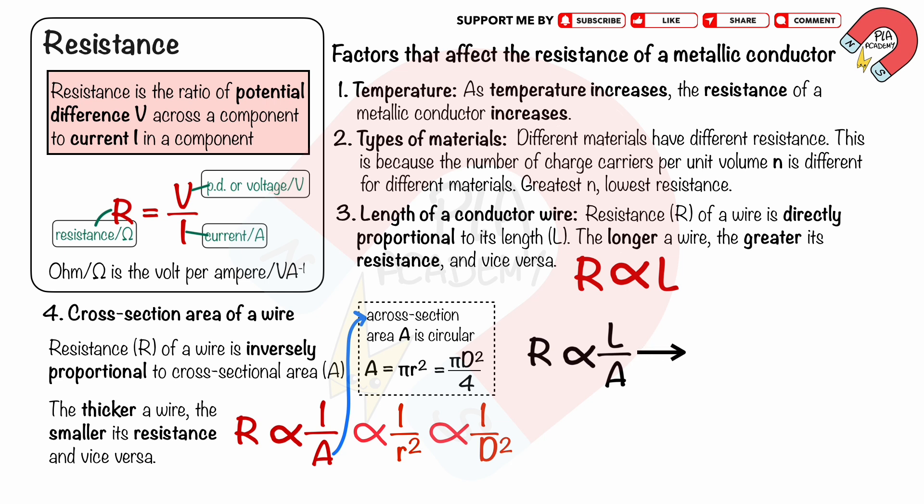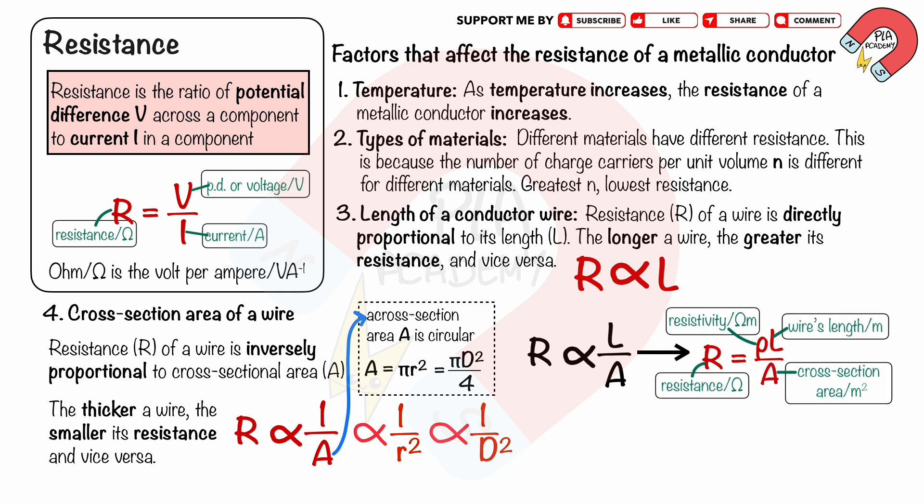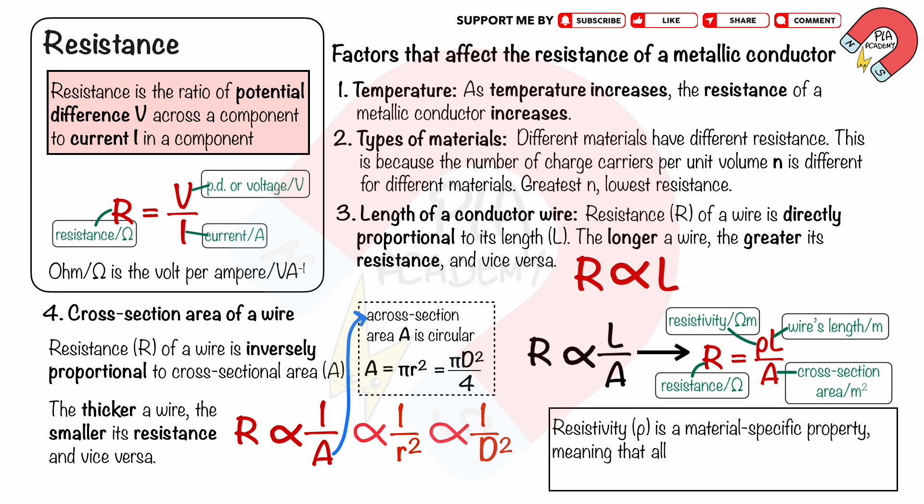Therefore, we can deduce that resistance is directly proportional to length L and inversely proportional to cross-sectional area A. We can write the equation of resistance as R equals ρL over A, where ρ is the resistivity of each material in ohm metres, L is the length in metres, and A is the cross-sectional area in square metres. The resistivity ρ is a material-specific property, meaning that all samples of the same material have the same resistivity.